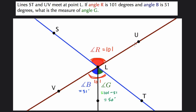And other vertical angles, ULT is a vertical angle to SLV. Those are also equal. They may be different than the other two vertical angles, but they are equal to each other.